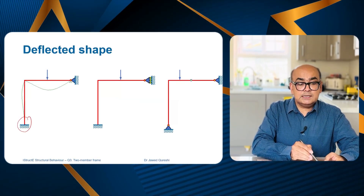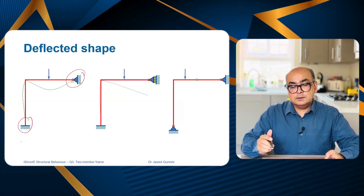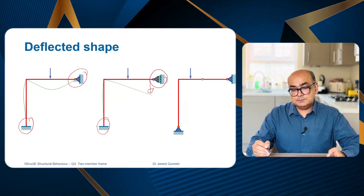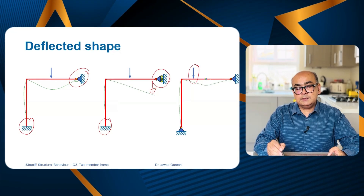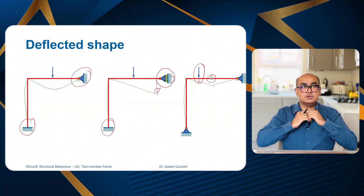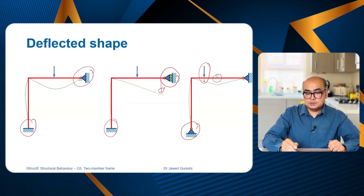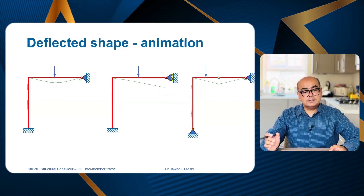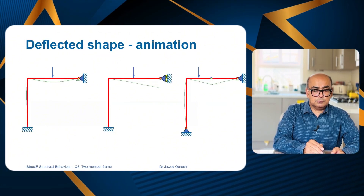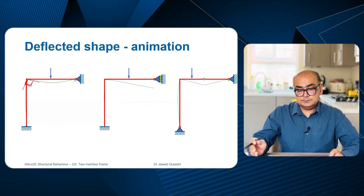For the deflected shapes: in case one the fixed support will not allow rotation, so rotation happens at the top joint. In case two, the roller allows the right end to move down, so there is no moment reaction there. In case three, the internal pin allows rotation, so that point moves down and rotates. Note that at the joint in case one, if you draw two tangents the angle between them is 90 degrees.